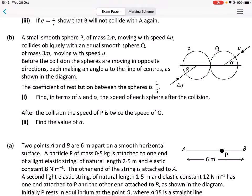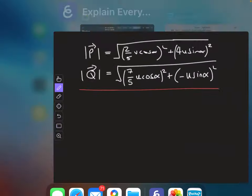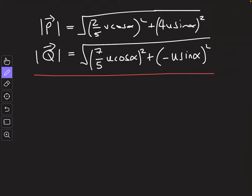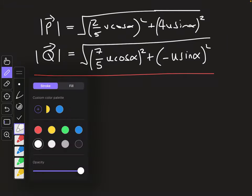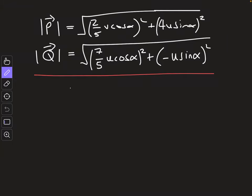So in part 1 we found the speed of P and Q, and now they tell us P is twice the speed of Q. So just to put that in simple terms, we can mathematically write that. So P should equal 2 times Q.